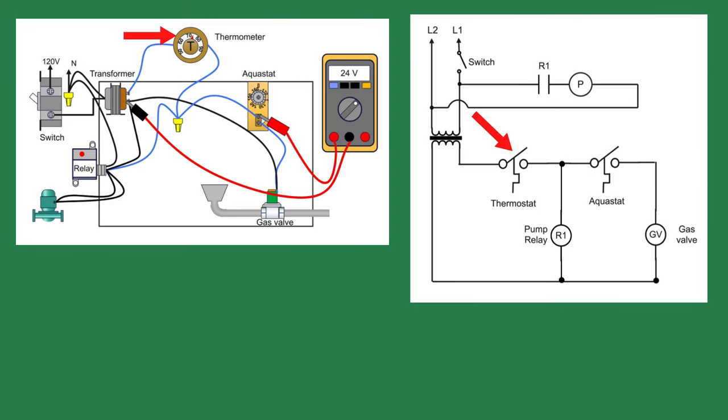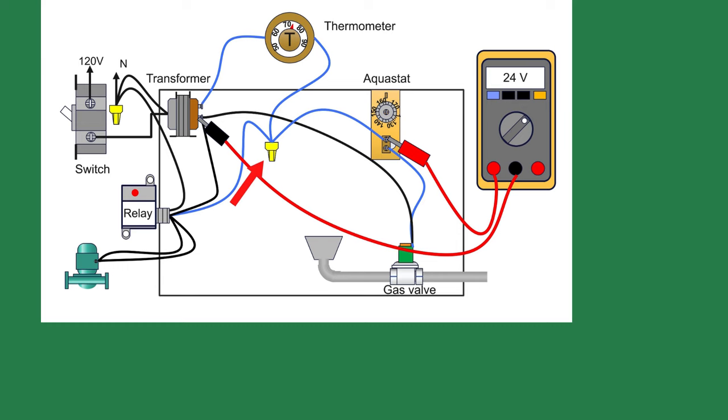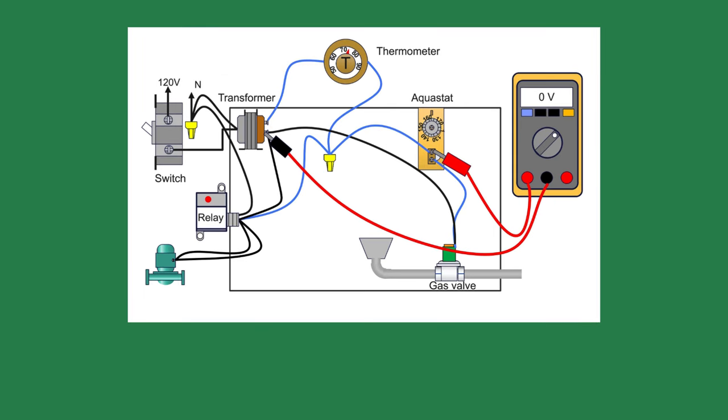The 24 volts leaves the transformer and goes to the thermostat. If the room temperature is lower than the thermostat set point, we should have power returning from the thermostat and could verify that by touching one meter lead on the incoming terminal of the aquastat and the other to the neutral terminal on the transformer. You could also insert the meter probe into the yellow wire nut instead of the aquastat control. We know the red light on the relay is not lit, so we know we have no power returning from the thermostat because the same wire from the thermostat feeds the coil on the relay.